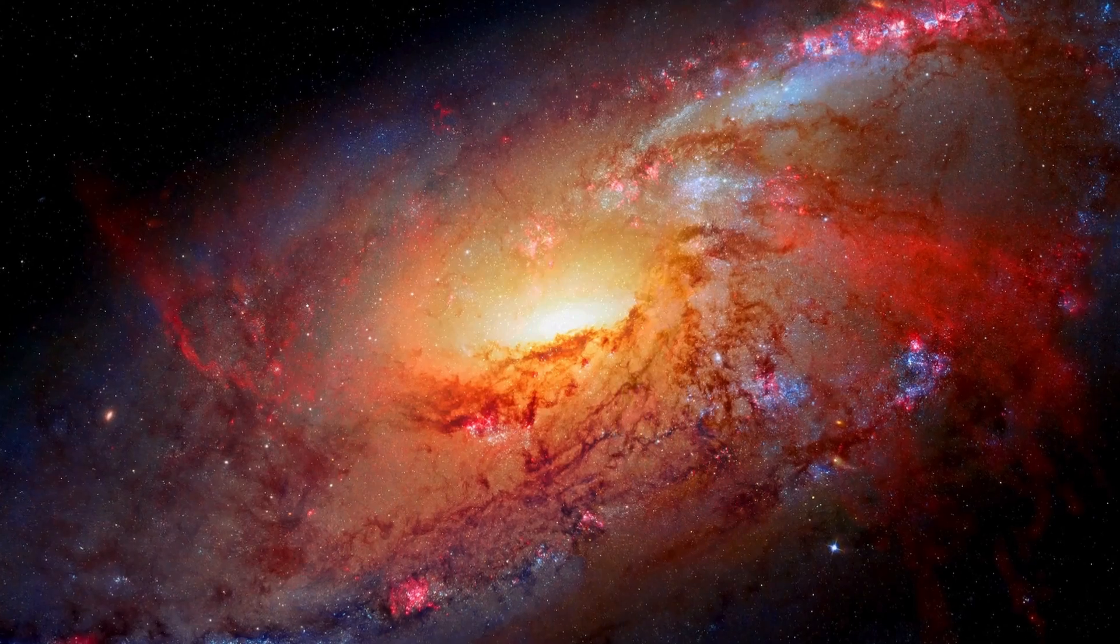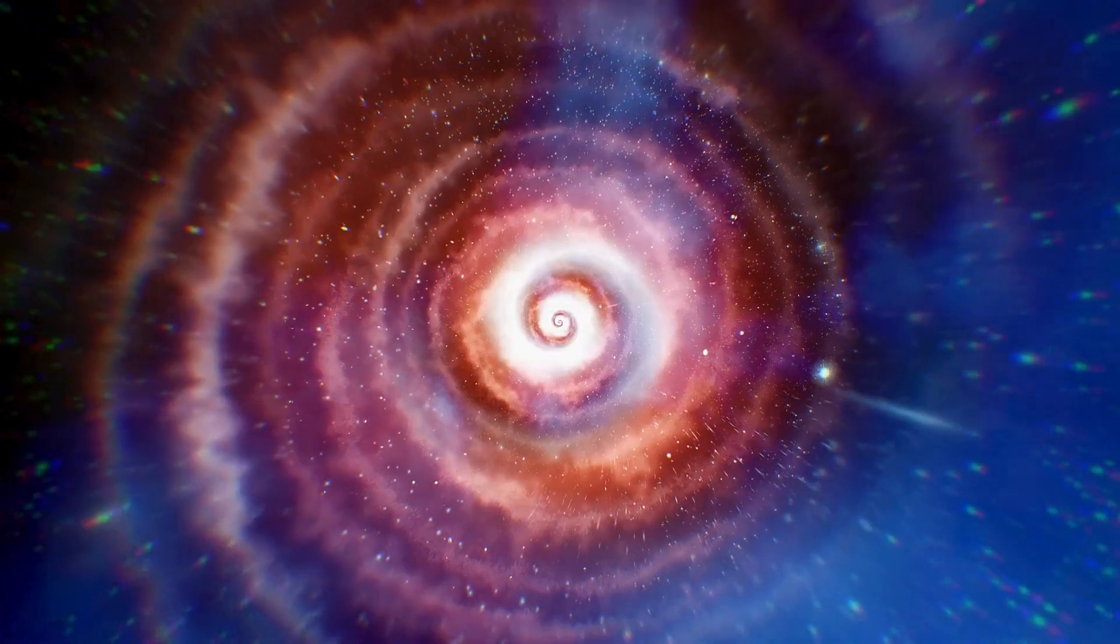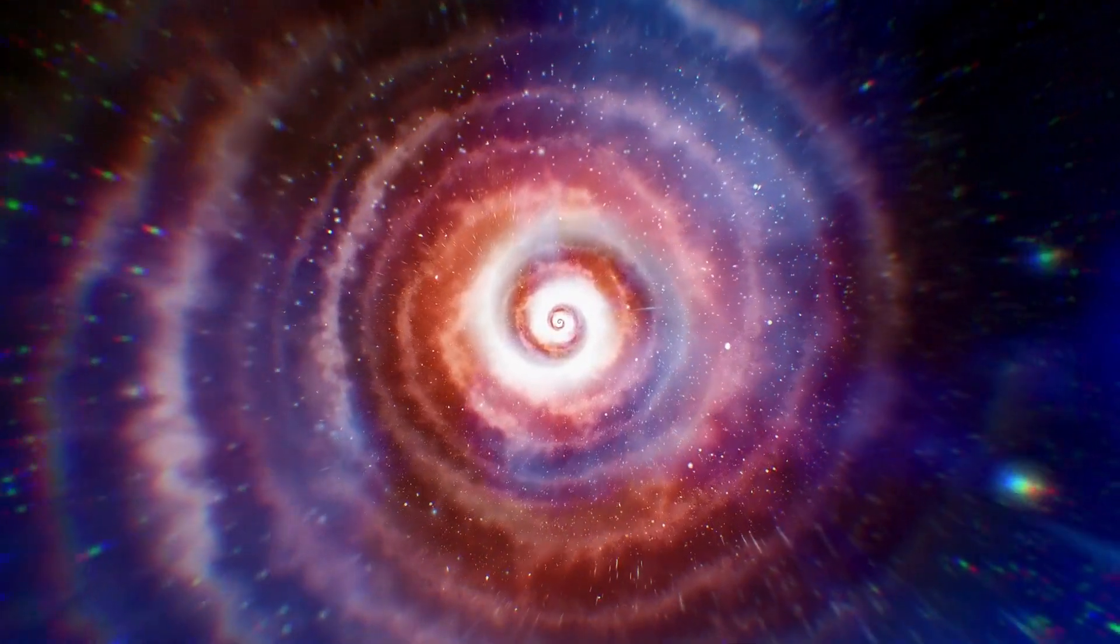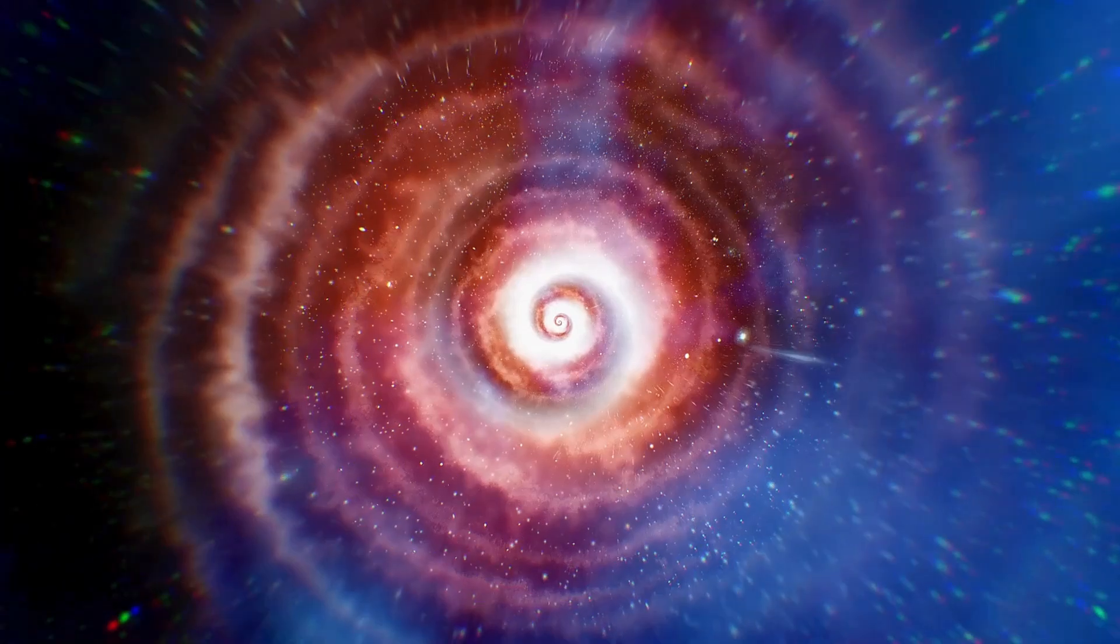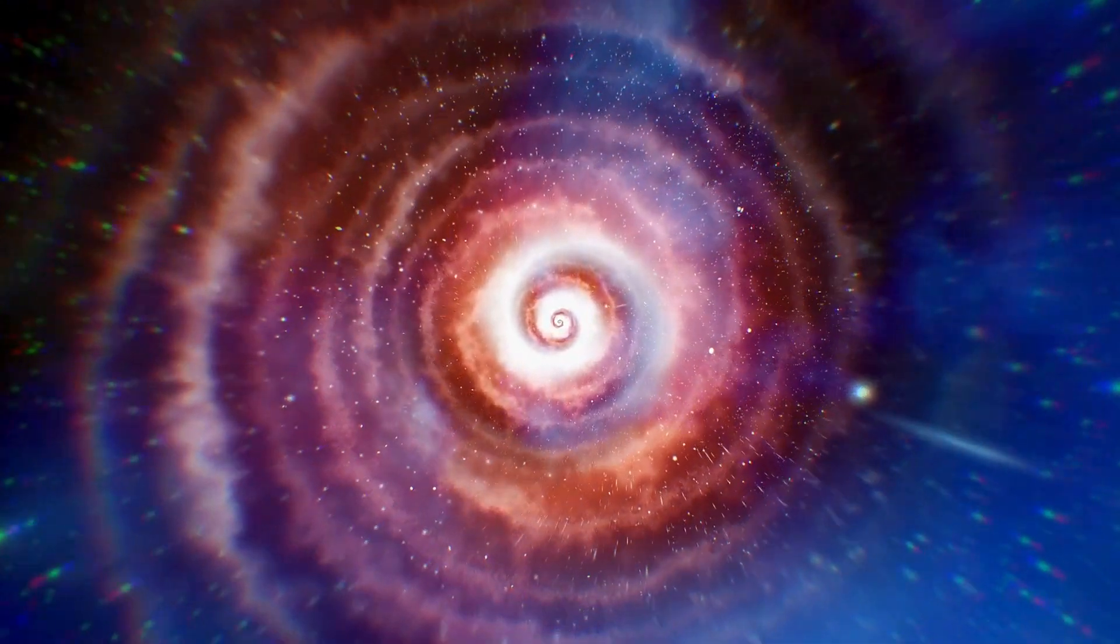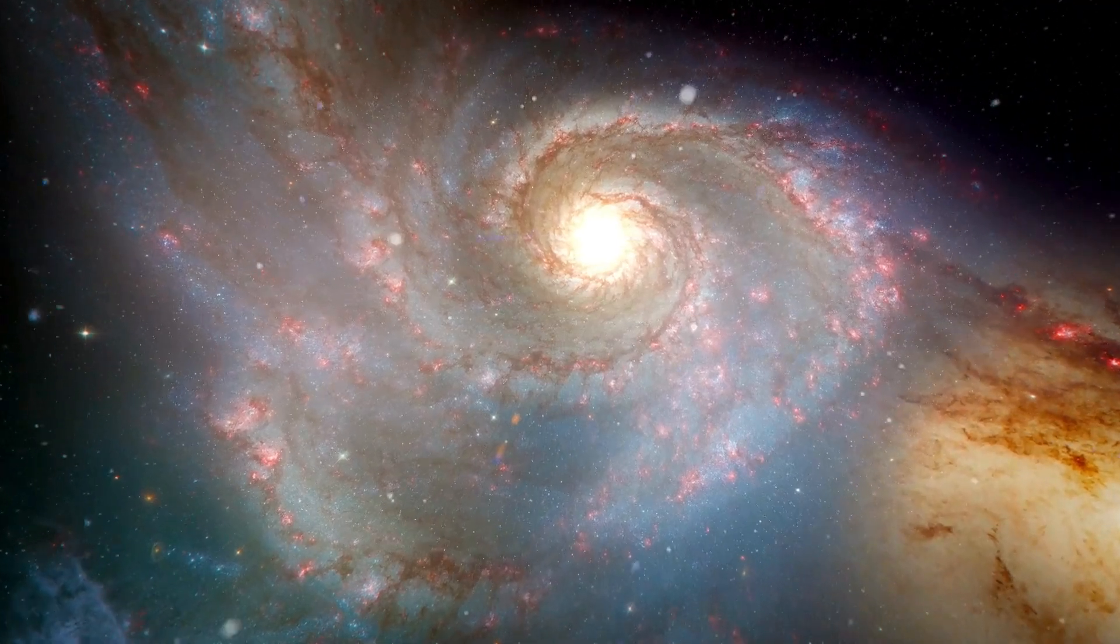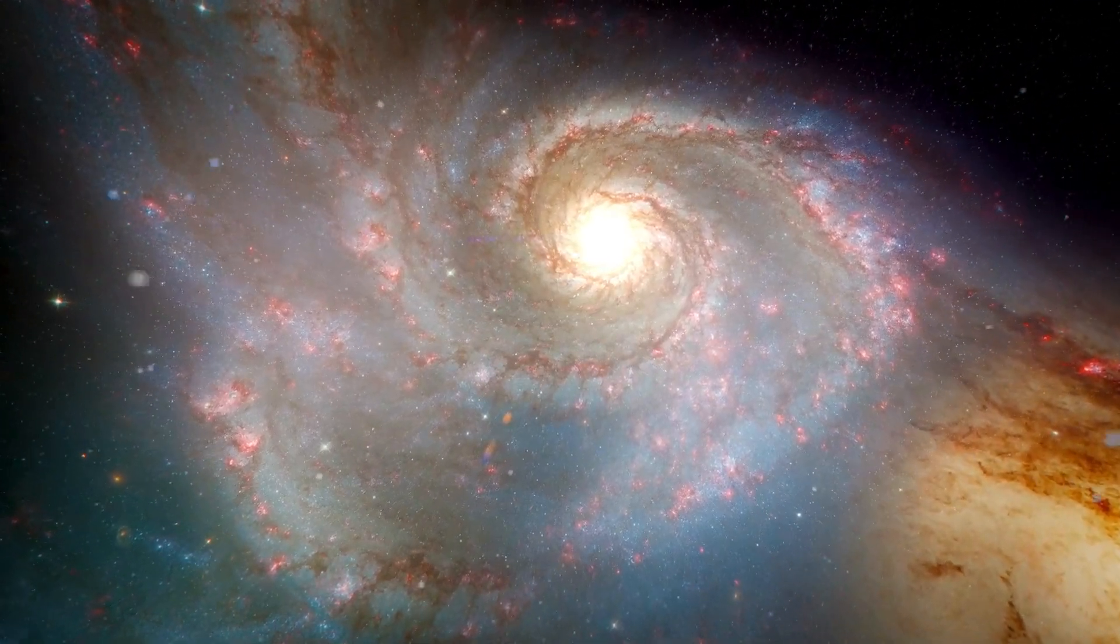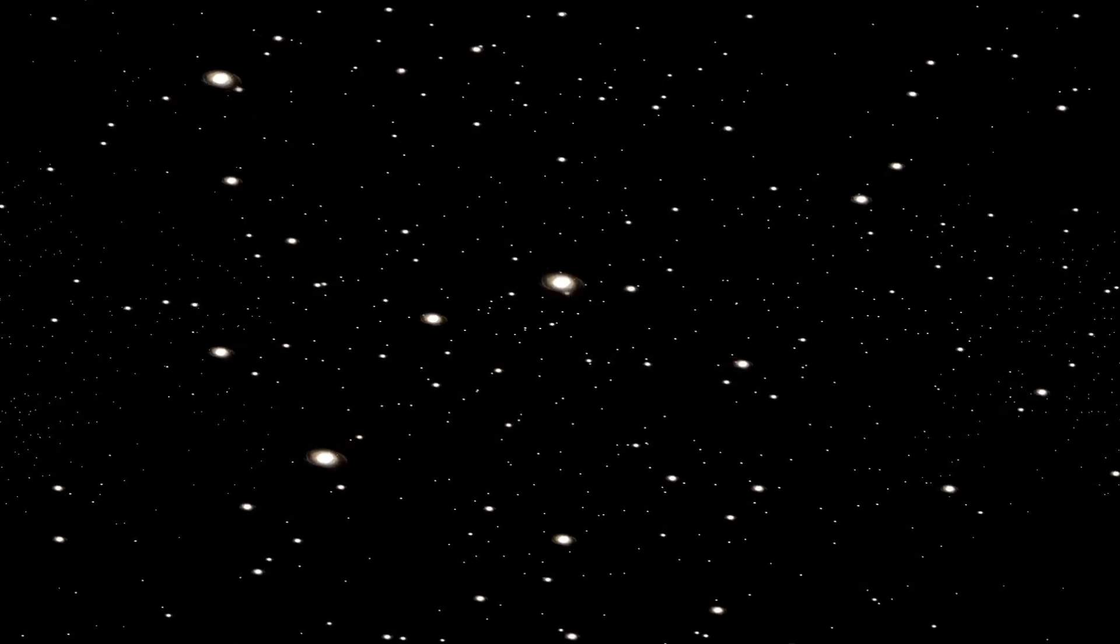Imagine exploring this exoplanet, so close to us in astronomical terms, just 4.2 light-years away. It's like examining our cosmic backyard. Proxima b, comparable in size to Earth and positioned in the habitable zone, is an enticing target for interstellar exploration. However, reaching it is no easy feat. A craft like Voyager 2 would take 75,000 years to reach the Proxima Centauri system.